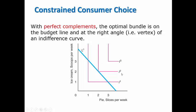Remember, the min function that describes perfect complement goods for utility is not differentiable. So the marginal rate of substitution is not defined, and so we don't have a true tangency.